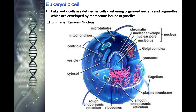Because the eukaryotic cell's nucleus is surrounded by a membrane, it is often said to have a true nucleus. Organelles, meaning 'little organs,' have specialized cellular roles just as the organs of your body have specialized roles — they allow different functions to be compartmentalized in different areas of the cell.